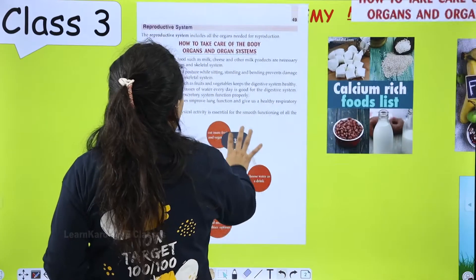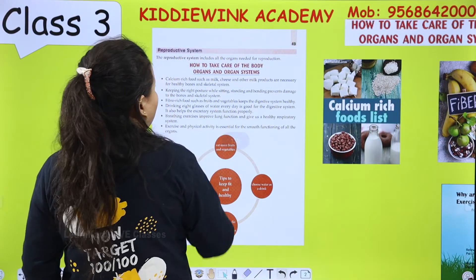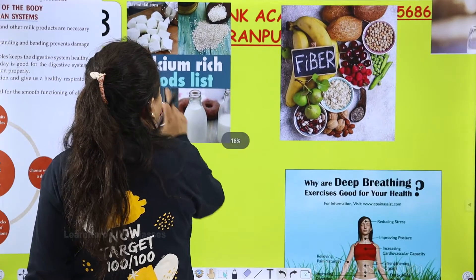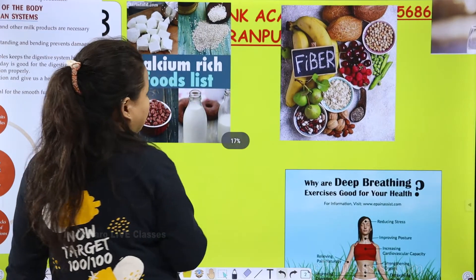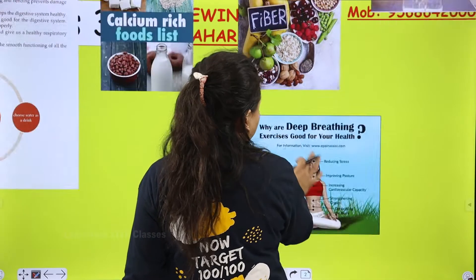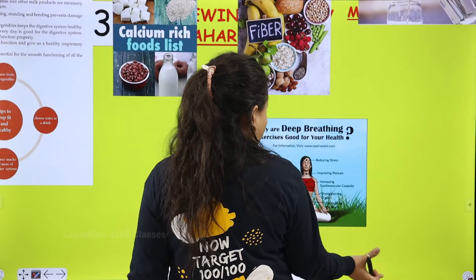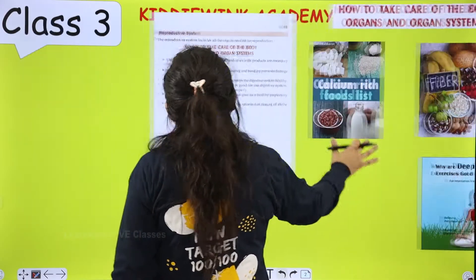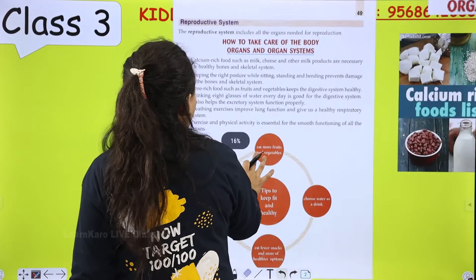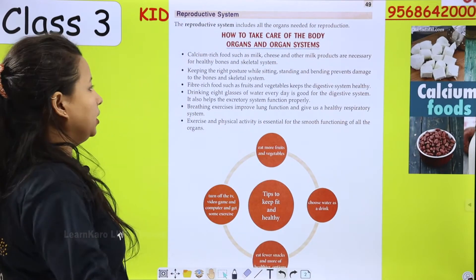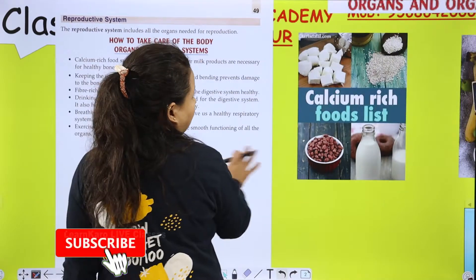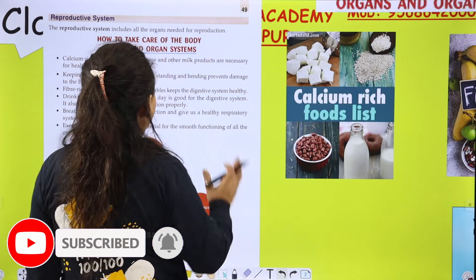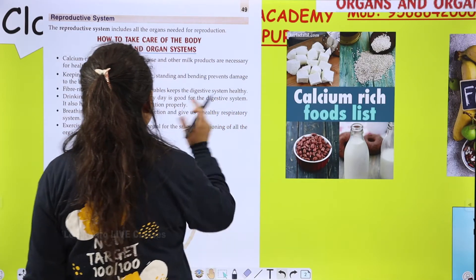So we have to take care of our body very nicely. Hamei bahut achhe tareeqe se apni body ka dhyan rakhna chahiye. So here are some lists: calcium-rich food, fiber-rich fruits, deep breathing or exercise, and drinking water. First point: calcium-rich food such as milk, cheese and other milk products are necessary for healthy bones and skeletal system.